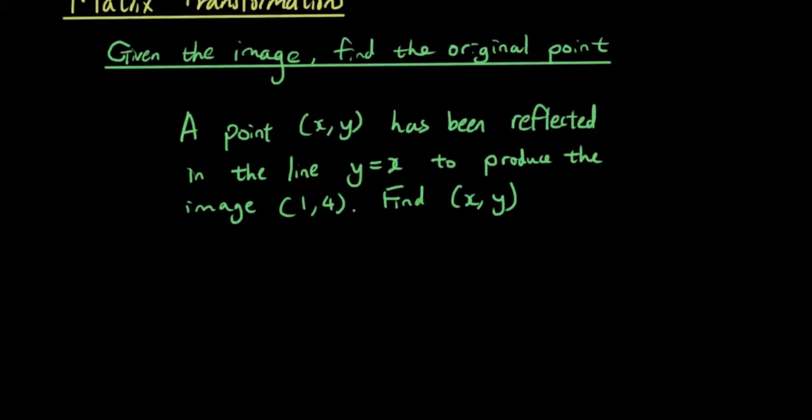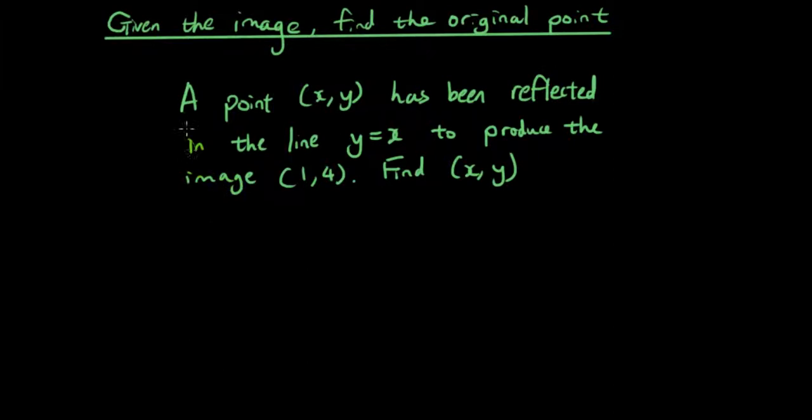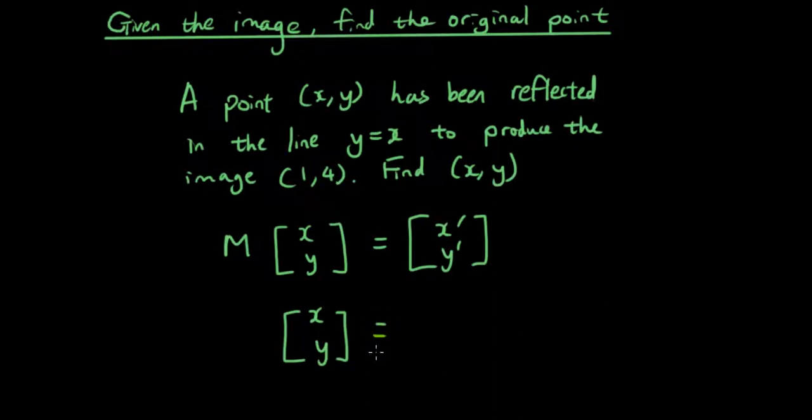Well, we know that a transformation matrix, let's call it M, multiplied by the point xy will give you x'y' which is the image. So if we want to find out what x and y were, then what you do is you multiply both sides by M inverse.